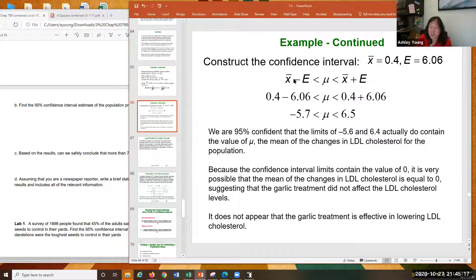So I'm going to take my X bar, which was 0.4, and I'm going to subtract 6.06. I'm going to add 6.06 and you'll end up with negative 5.66. So it rounds to negative 5.7, and you'll end up with 6.46 which rounds to 6.5. So our mean, we're saying our mean is between these two. Why do I round to one decimal place? Because my mean has one decimal place. So at the end, you round to however many decimal places your mean has.